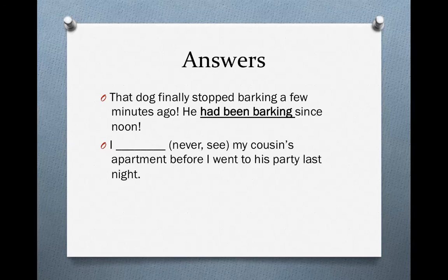First: That dog finally stopped barking a few minutes ago. He had been barking since noon. We have two events in the past — the dog stopped barking, and the dog had been barking since noon. The second event happened first and was in progress for a long period of time, which we know because of the phrase since noon. Therefore, we need to use the past perfect progressive.